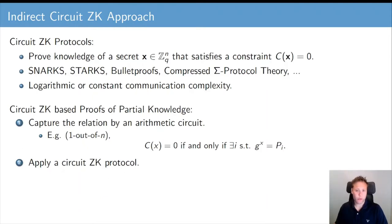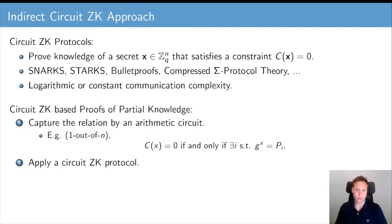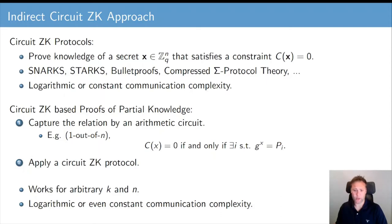Circuit zero-knowledge protocols also immediately give a solution for the proofs of partial knowledge problem. What we can do is capture the proof of partial knowledge relation by an arithmetic circuit. For example, for the 1 out of n case, we could construct an arithmetic circuit that evaluates to 0 if and only if the input x is the discrete logarithm of one of the public problem instances PI. This is a somewhat indirect approach, but it works for arbitrary k and n, and you can achieve logarithmic or even constant communication complexity depending on the circuit zero-knowledge protocol used.